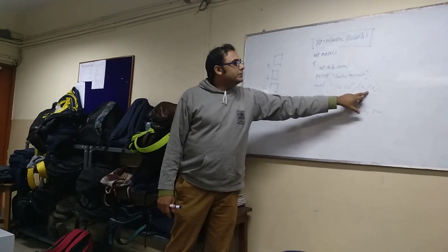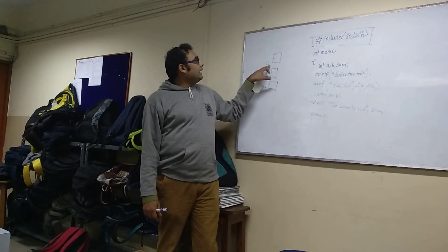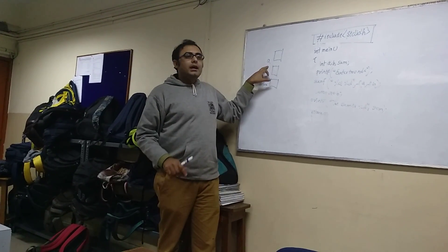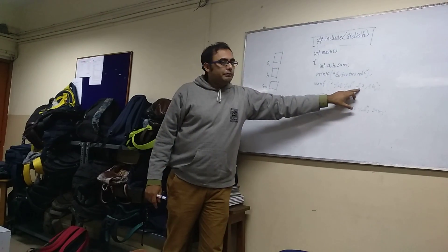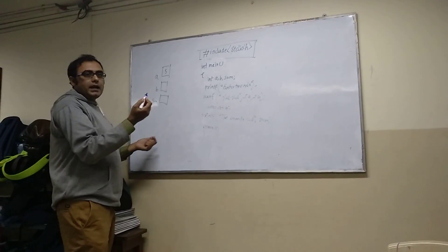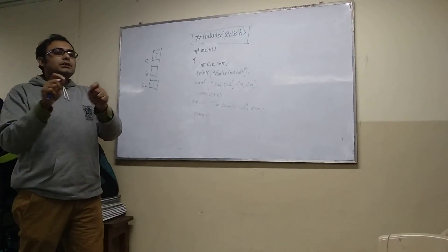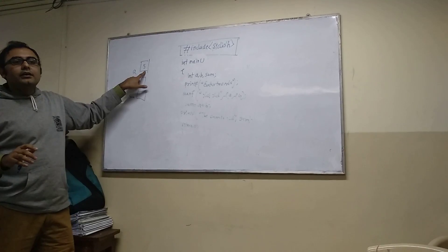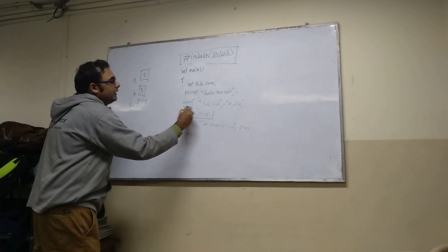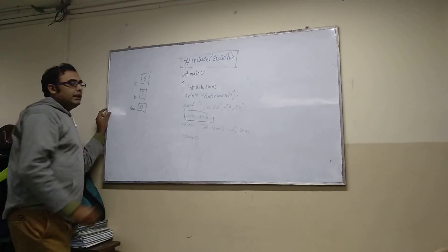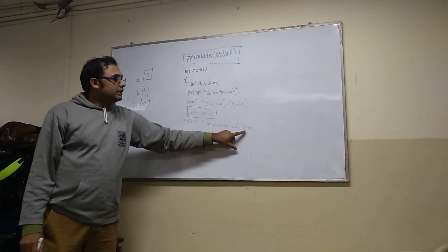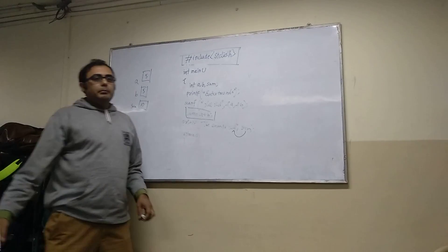And this ampersand — what does it mean? This is the address. So if `a` is a variable which exists in a memory block, wherever `a` is created, it has some address. You have to store the value which is inserted through the keyboard at that address. Say you insert 5 — it should be stored at location `a`, and say 5 in `b`. So by using `a + b`, you compute the sum. Then you print it, and writing `%d` means this particular value of the sum will be displayed.